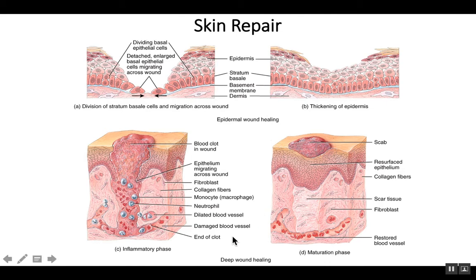In the bottom two panels, we have deep wound healing. Deep wound healing has a major inflammatory phase — that is the key feature. The inflammatory response increases blood flow to the area. The signs of inflammation are that the skin becomes red from increased blood flow, it becomes warm because blood is at a higher temperature than most other tissues, swelling can occur, and there is more pain due to stimulation of the pain neurons.